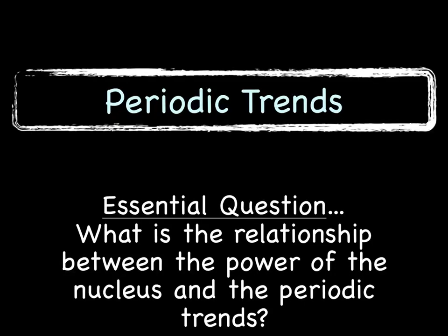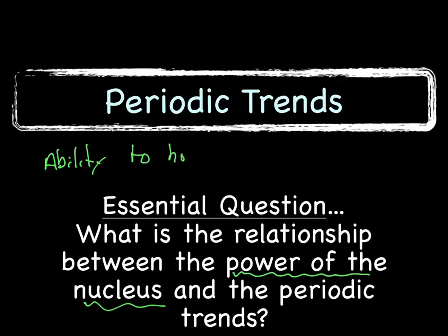Hello, this is Ms. Moore, and today during chemistry we're going to discuss periodic trends. Today's essential question: what is the relationship between the power of the nucleus and the periodic trends? The important part is the power of the nucleus — that refers to the nucleus's ability to hold onto its valence electrons.